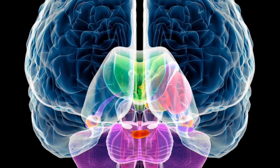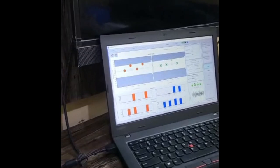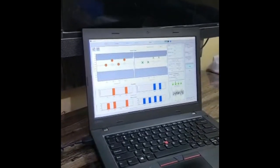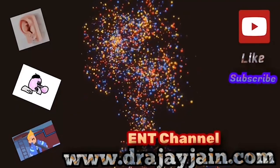Another use of ABR is intraoperative monitoring of the eighth cranial nerve when neurosurgeons or neurotologists are operating on the eighth cranial nerve and wish to check the integrity of the auditory nerve. ABR is therefore a very handy research and clinical tool in many clinical situations that affect our hearing. Please don't forget to like the video and subscribe to the channel for future updates. Thank you.